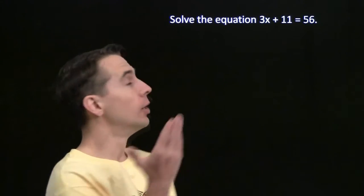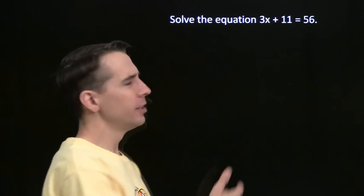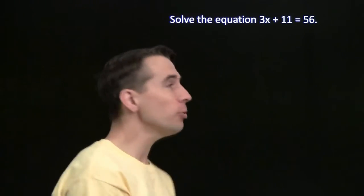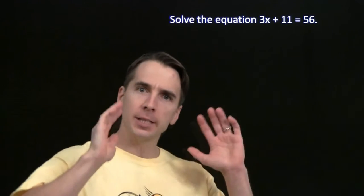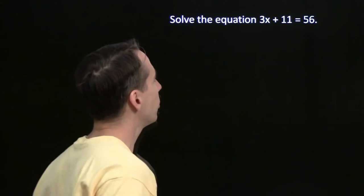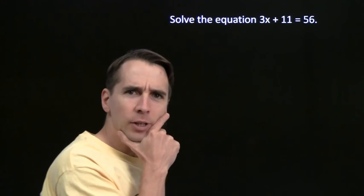Now, we know how to solve equations, right? We get the variable by itself. But x here is being bothered by two things. It's being bothered by the 3 and the 11. We got to get rid of both of those, get x by itself on one side of the equation. So which one should we get rid of first?